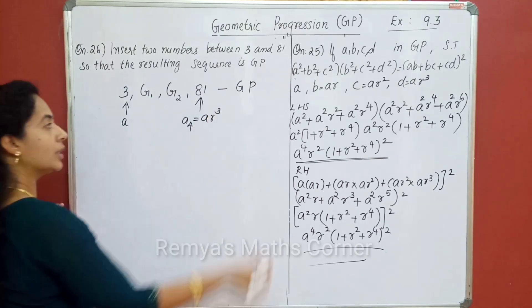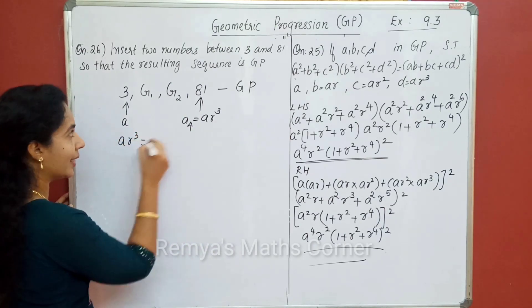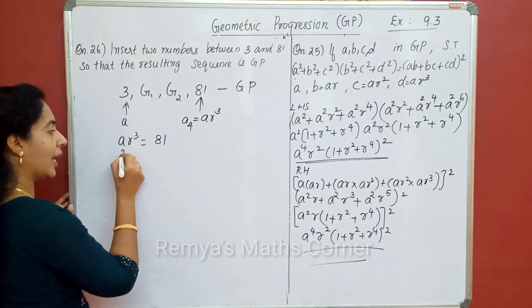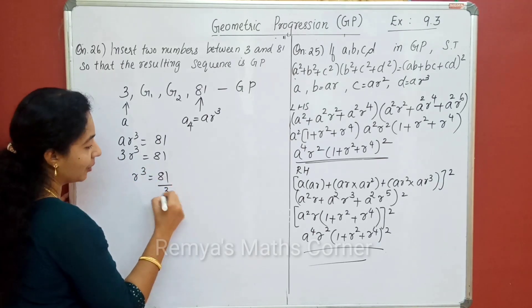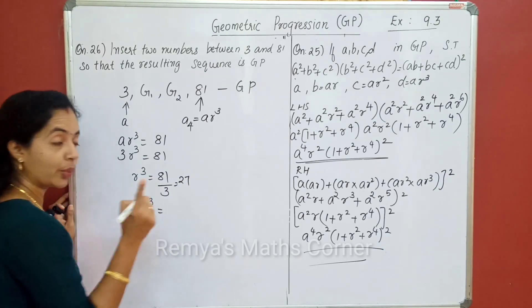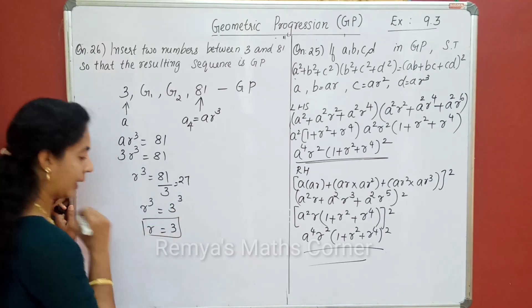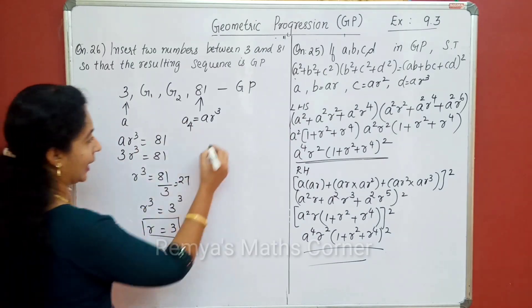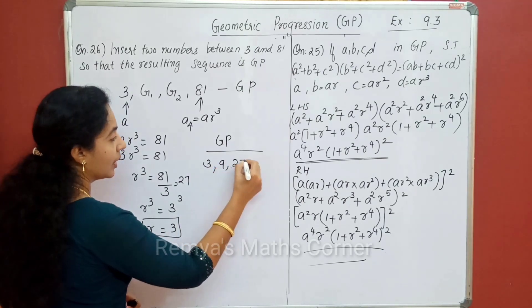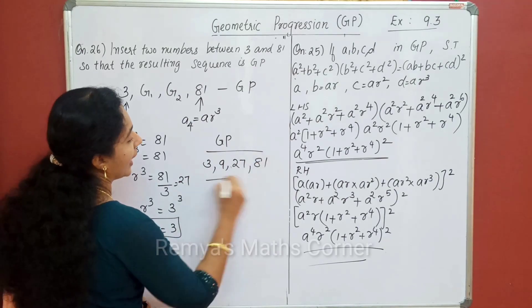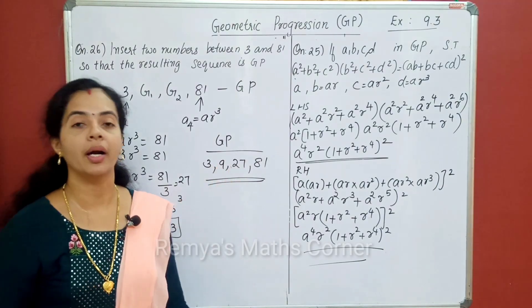We have to insert 2 numbers. We have to start with r. Now, if we find 1, 81. That's 3. So, 3r³ is 81. R raised to 3 is equal to 81 divided by 3, which is 27. Then, r³ is equal to 27. R³ is 3. So, 3 is 3. Therefore, r is equal to 3. Now, r is equal to 3 — we will complete the GP. 3, 3 into 3 is 9, 9 into 3 is 27, 27 into 3 is 81. This is how we get the GP. We have added numbers 9 and 27 between 3 and 81.